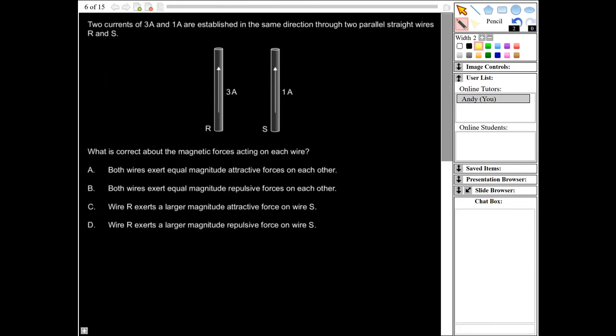And the last question, so this will be question 18. It says two currents of three amps and one amp are established in the same direction through two parallel straight wires, R and S. What is correct about the magnetic forces acting on each wire?